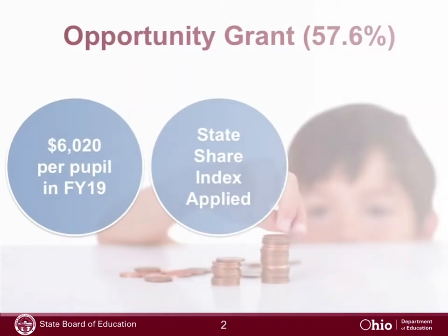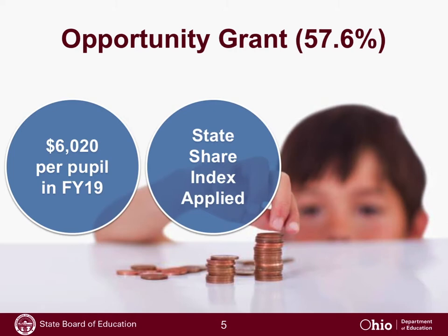Let's talk about the Opportunity Grant, which is close to 60% of the overall funding formula. It's a relatively simple idea. For fiscal year 19, it starts with a dollar amount per pupil of $6,020. That's multiplied by a count of students — about 1.7 million students. Then the state share index is applied to that amount, forming the fundamental basis, the foundation, of the amount that a school district receives from the state.